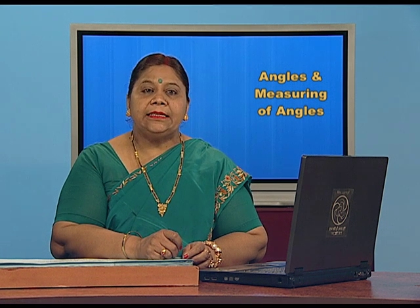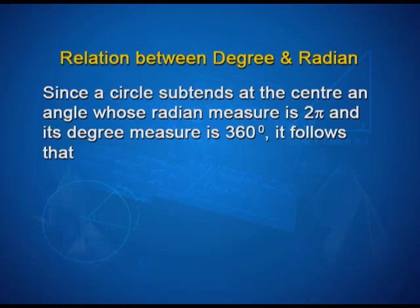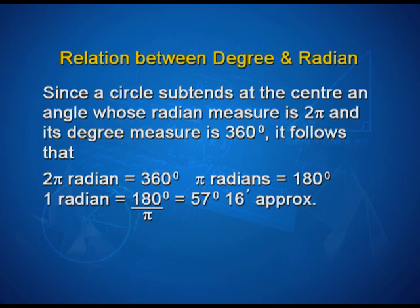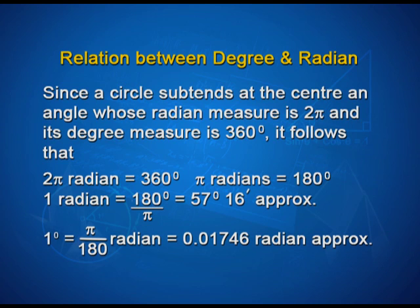Now let us see the relation between degree and radian. Since a circle subtends at the center an angle whose radian measure is 2π and whose degree measure is 360°, it follows that 2π radians = 360°. That means π radians = 180°. Therefore, 1 radian = 180°/π, which is approximately 57° 16'. And 1 degree = π/180 radians, which is approximately 0.01746 radians.